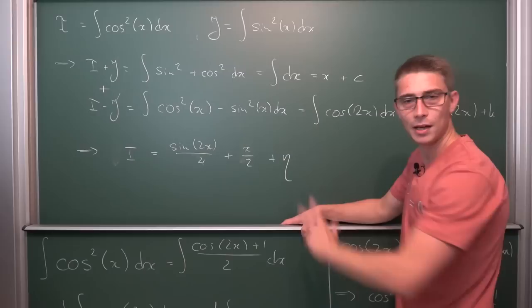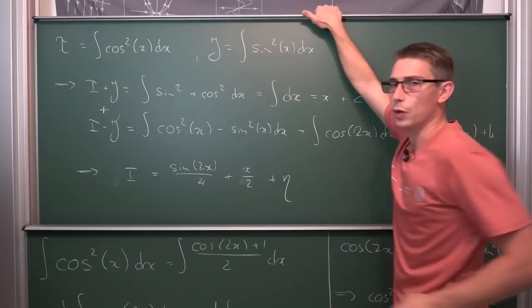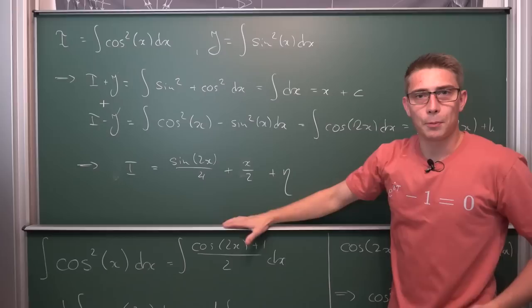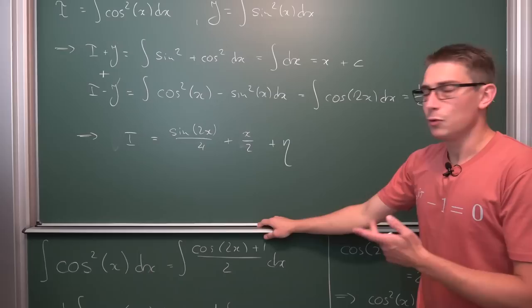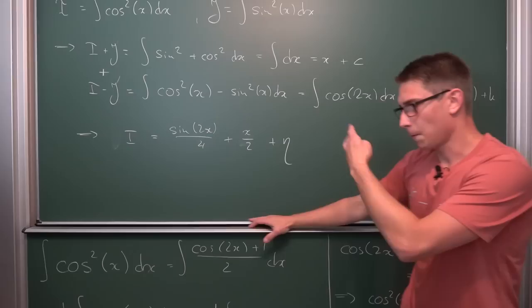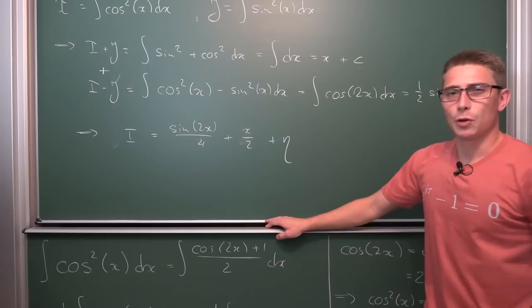And the coolest thing about this method is. Not like this method down here. You can immediately also get the integral of the sine squared out. By basically just subtracting these two equations from one another. And I think these two methods are pretty elegant. And don't involve any integration by parts. Which I find to be really cool. Tell me down there in the comments if you liked these methods. Or which one you like better. Or if you got an even better method to evaluate this type of integral. Using nut integration by parts.